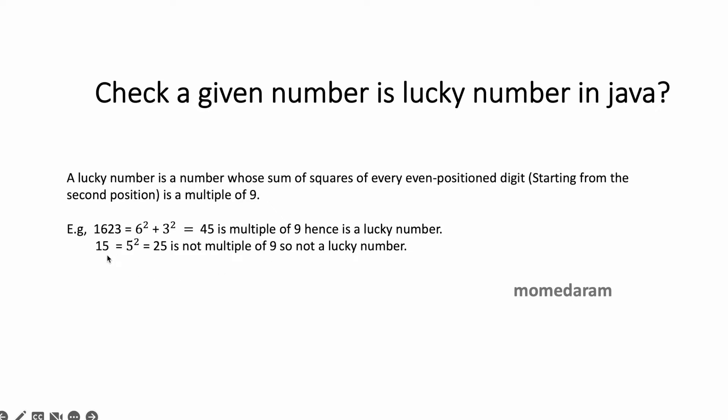And for 15, the even digit is 5. 5 squared equals 25. Since 25 is not a multiple of 9, this number is not a lucky number.